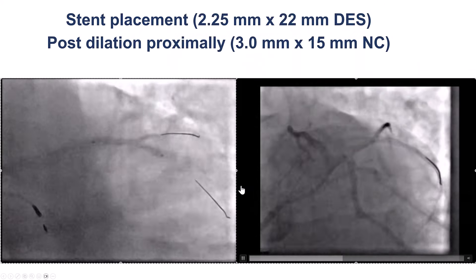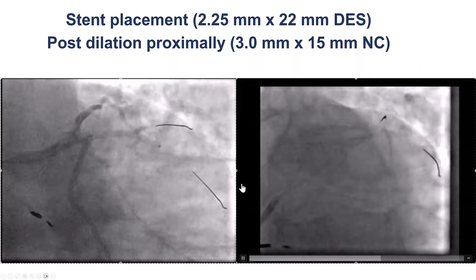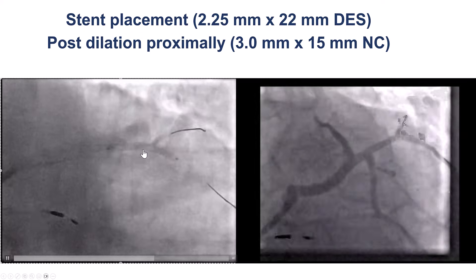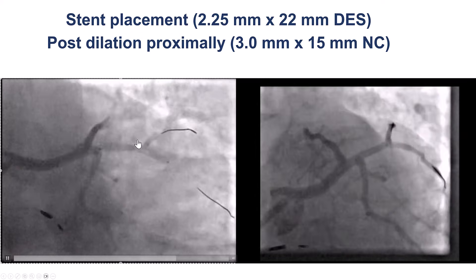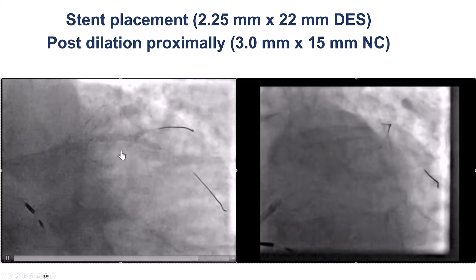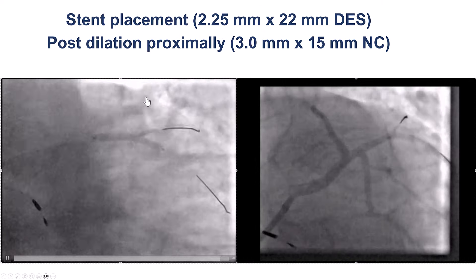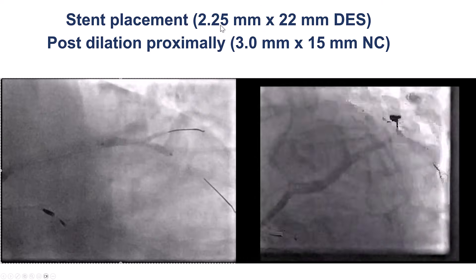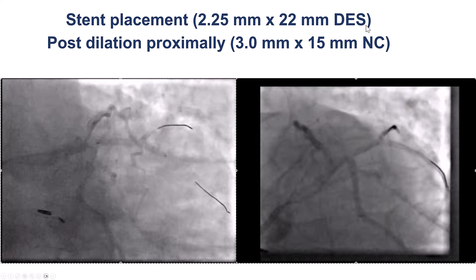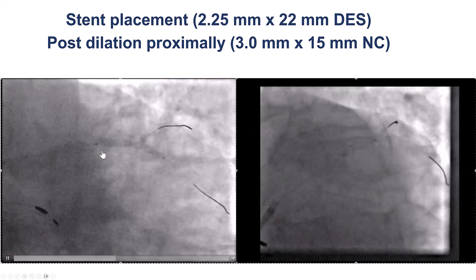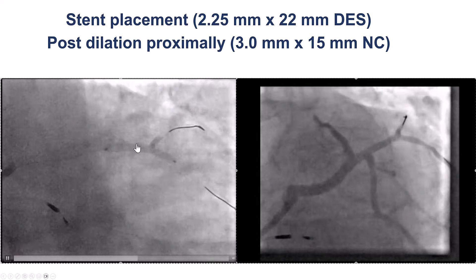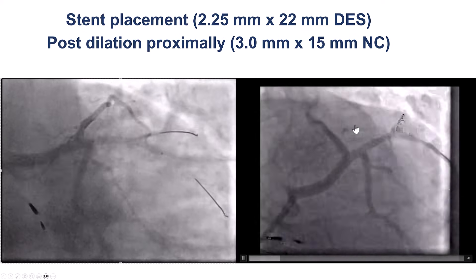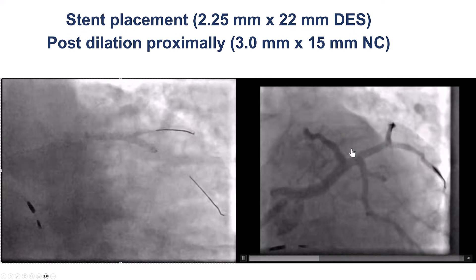We decided to stent using the provisional approach, since there was no significant disease in the origin of the side branch. We placed a 2.25 by 22 millimeter stent and did proximal optimization with a 3.0 millimeter NC balloon.